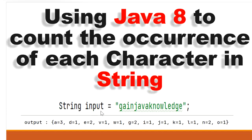For example, we have the input string 'gain java knowledge'. We need to count the occurrence of each character — like how many times 'g' is occurring in this string. Here we can see it's 2 times, so the output is g equals 2. Similarly, 'a' is occurring 3 times in this string.